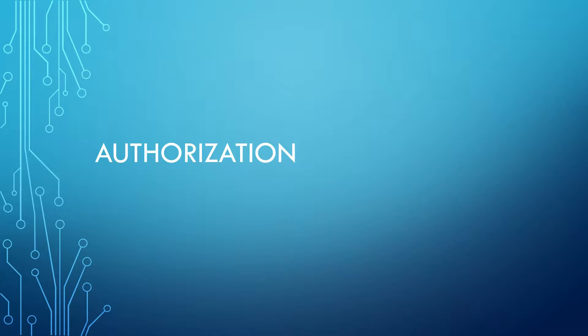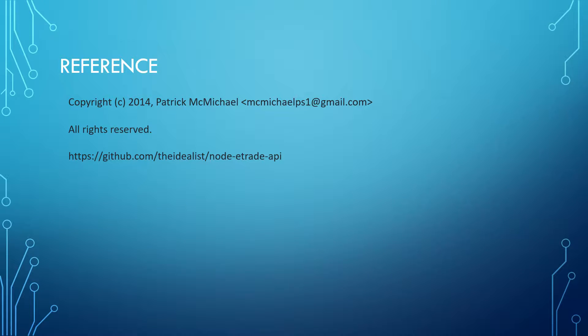Welcome back everybody. In this video we are going to be working on authorization — getting authorization from E-Trade to work with their API. We are going to be using another project's code. I made a reference here: github.com/theidealist/node-etrade-api. That code is for version zero, and what we're going to be doing in this tutorial is update that code so we can communicate with E-Trade's version one API.